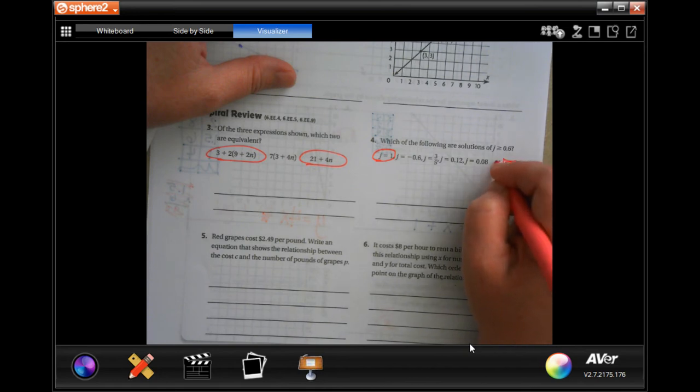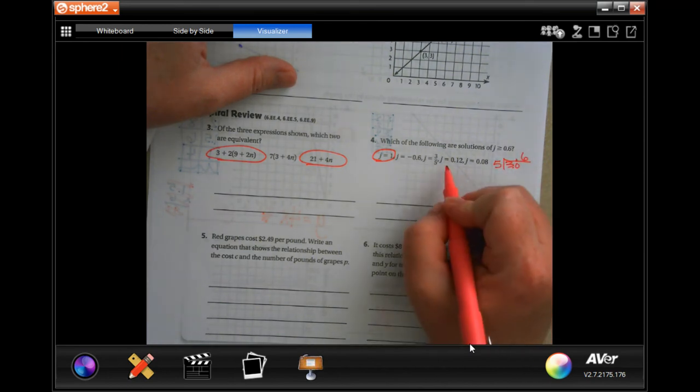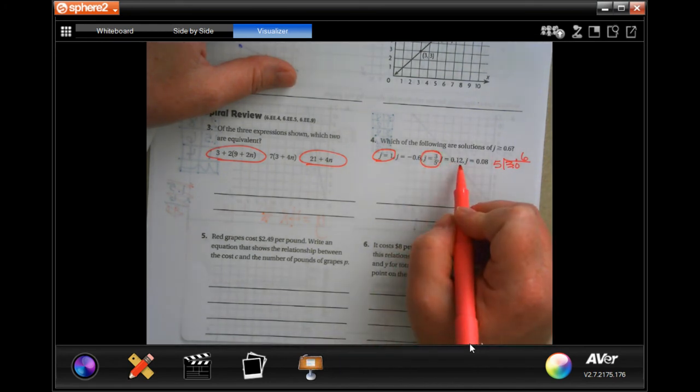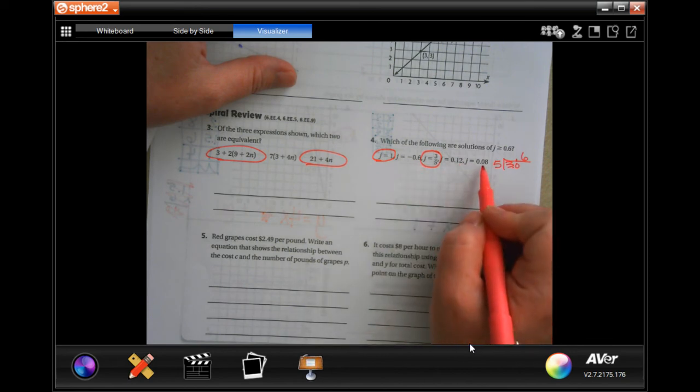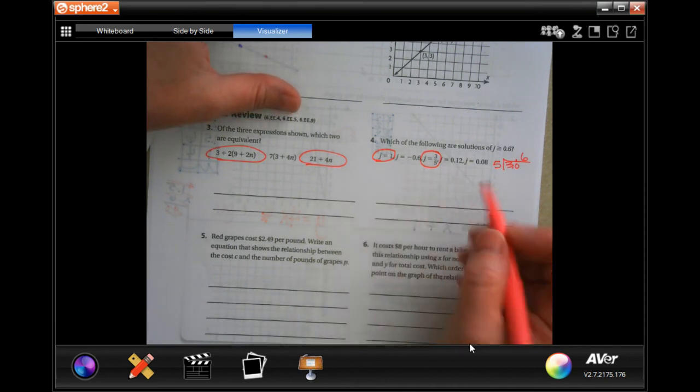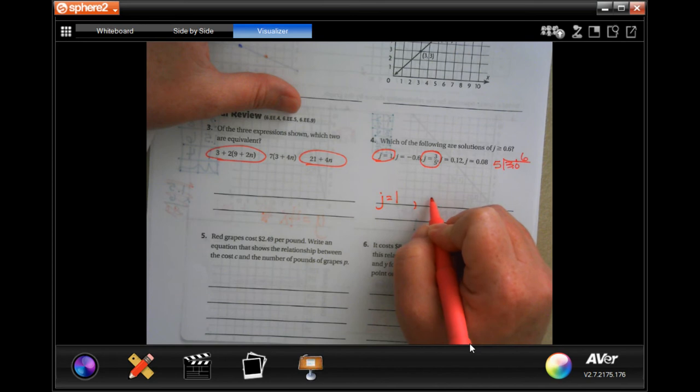Three fifths is, if we did three inside the box and five out, we would have to add that decimal and raise it. So then five would go into thirty, six times, which gives us point six. So that three fifths is equal. Point twelve, one is smaller than six, so no it's not. And zero is smaller than six, so no it's not. So just those ones, j equals one and j equals three fifths.